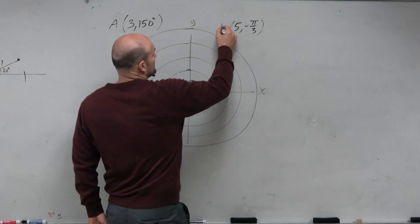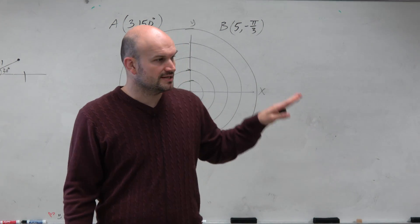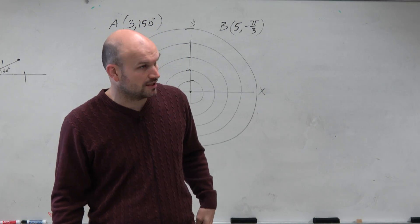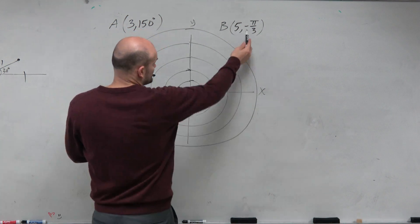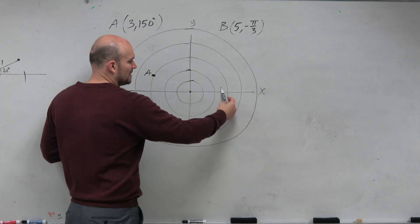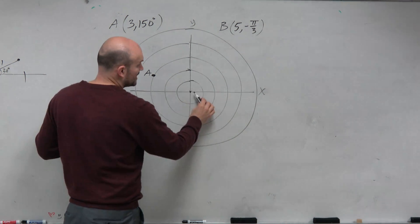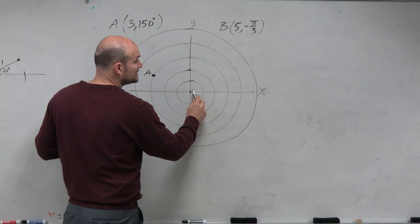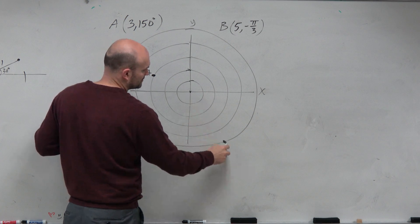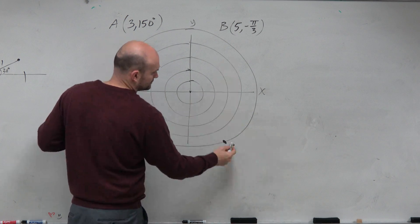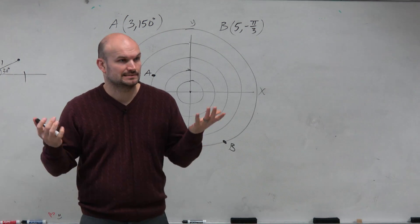For point B, you can see that this is a negative angle. In standard form, negative just means it's going to be going clockwise. So this is negative pi over 3 — that's 1 third, 2 thirds, 3 thirds of the way around — so it should be somewhere down there. And that's going to be a distance of 5 away from the origin: 1, 2, 3, 4, 5. Let's call that B. And there you go.